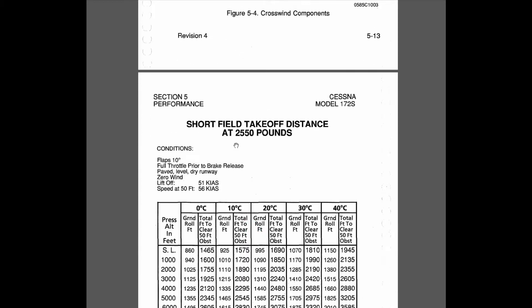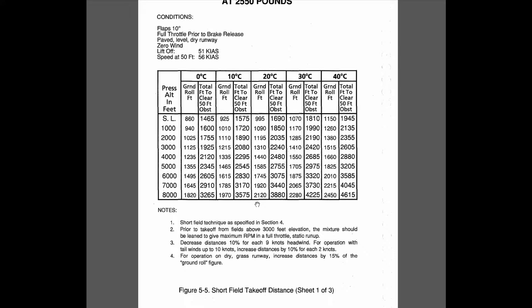So where is this needed? When the examiner gives you a runway and a wind and has you determine a performance figure. Moving down below the table to note 3: decrease distance 10 percent for each 9 knots of headwind. So if you're given runway 16 with an 18-knot wind from 130, you cannot simply say 18 knots is two times 9, so that's a 20-percent adjustment — that would be wrong.